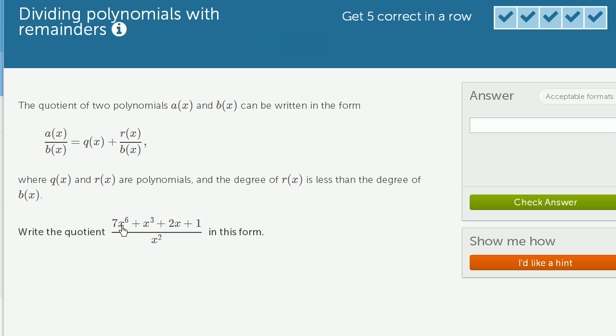What's 7x to the sixth divided by x squared? Well, x to the sixth divided by x squared is x to the fourth. So it's going to be 7x to the fourth power.